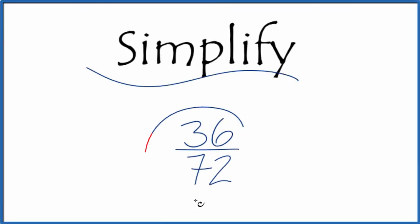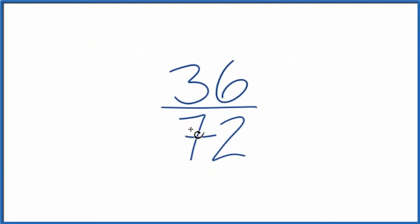Let's simplify the fraction 36 over 72. And what we're trying to do is find another fraction that's equal, has the same value as 36 over 72, but it's reduced to its lowest terms.